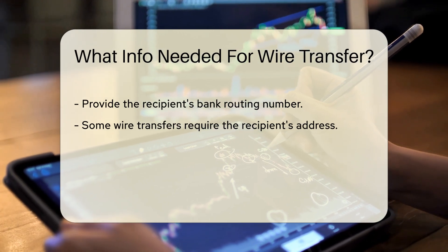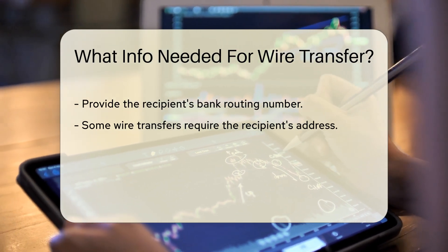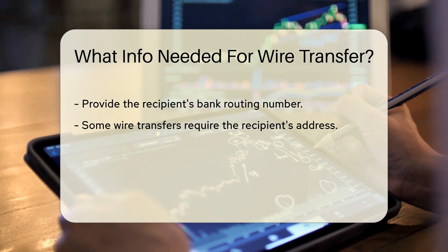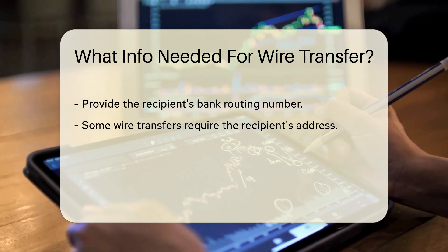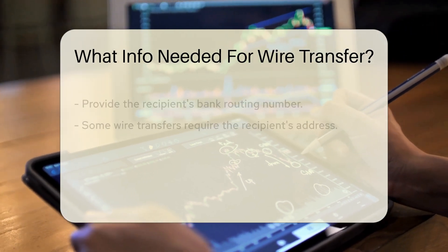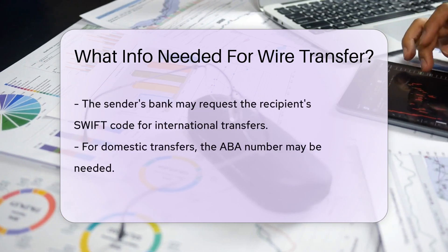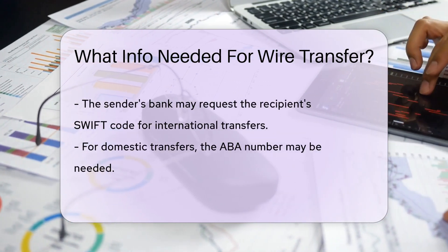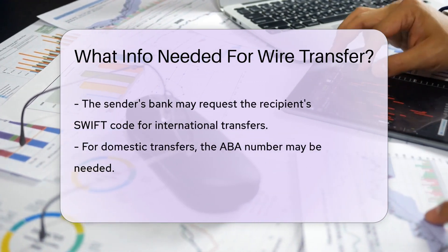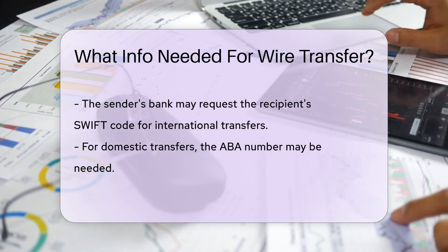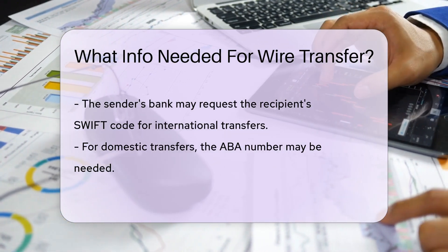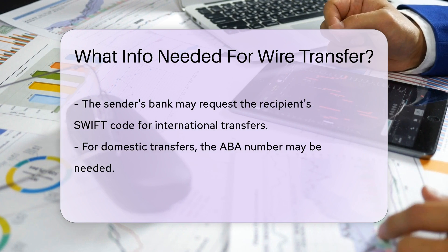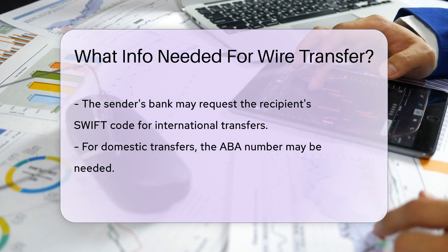Additionally, the sender must provide the recipient's bank routing number. This number helps identify the specific branch of the bank. Some wire transfers require the recipient's address, which adds another layer of verification. The sender's bank may also request the recipient's SWIFT code, which is used for international transfers.